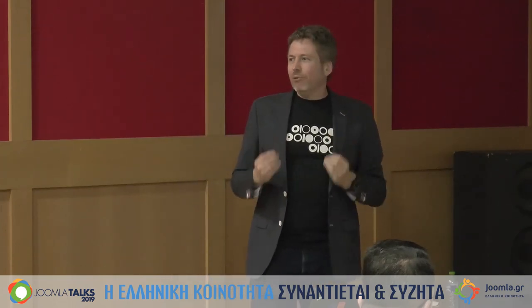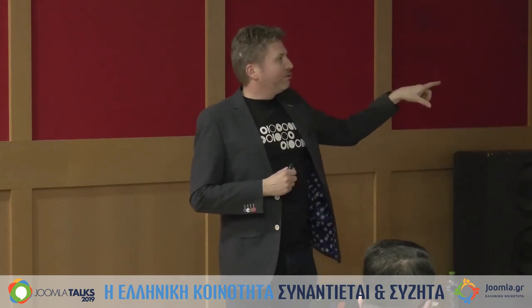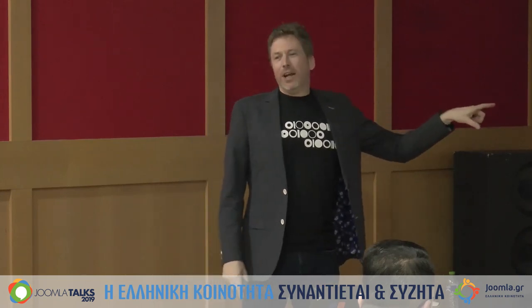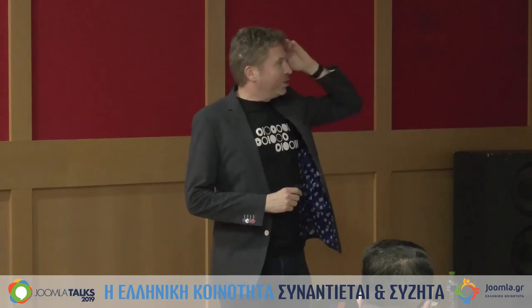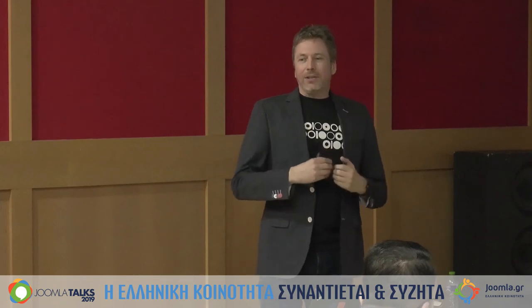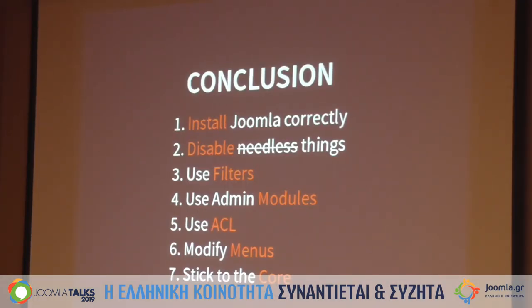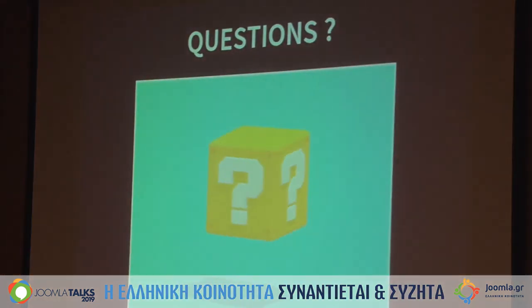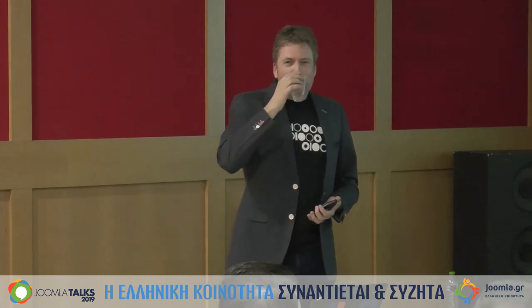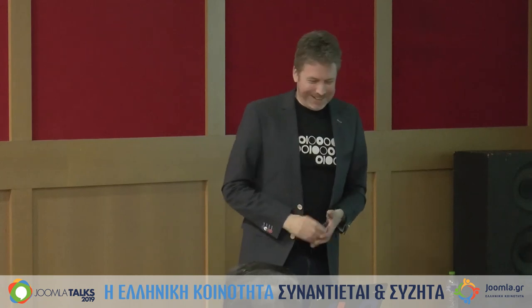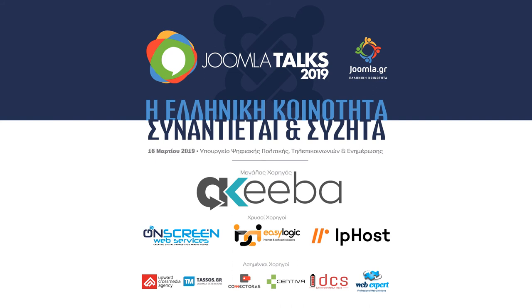So to summarize: it's really important to be safe with websites — use only trusted sources, be update proof, be active in the community, be smart and stick to the core, be user friendly, and don't make people click unnecessarily. Install Joomla correctly — start with nothing and only add what you need. Disable needless things, use filters, use admin modules for more information, create ACL profiles, modify menus, and stick to the core. That's it — any questions?